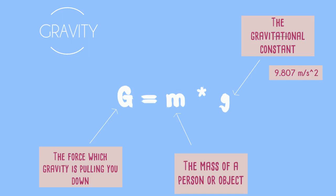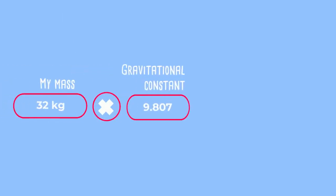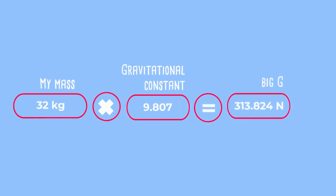So, my mass is 32 kilograms and small g is 9.807 meters per square second. What is G? G is 313.824 Newtons — Newtons being the unit of force named for Newton. Well, at least for me — try it yourself!